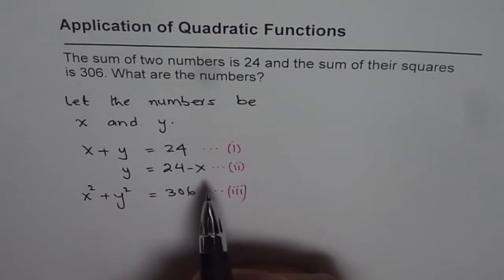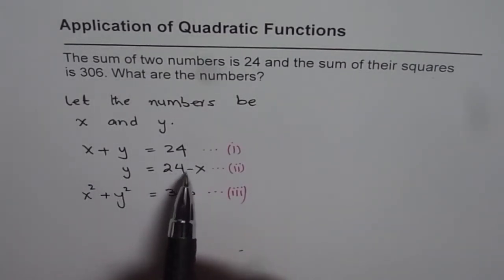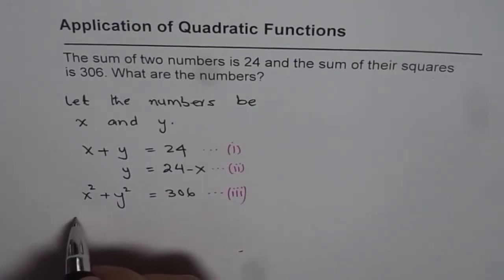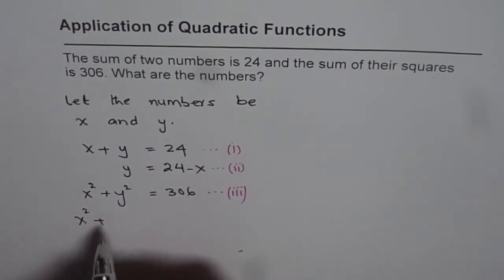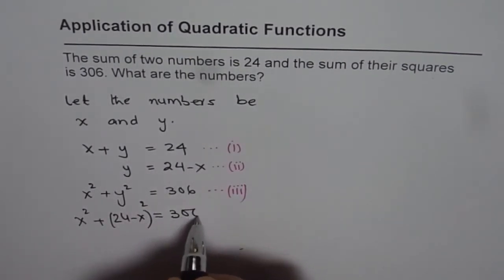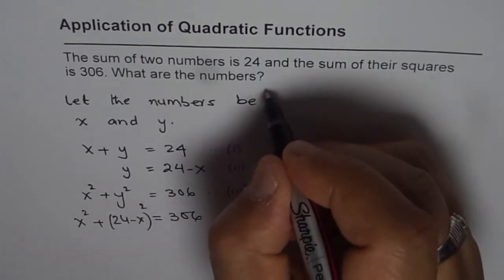To solve, what we can do is substitute y equals 24 minus x in the third equation. So we will substitute equation 2 and 3 so that we get an equation in just one variable. Doing so we get x squared plus (24 minus x) squared equals 306. Now this is the equation which is in one variable.